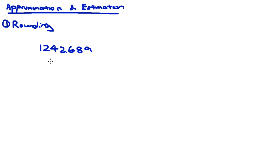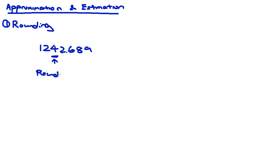If we are asked to round off to the nearest hundred, that means we don't want to see tens, ones, or decimal points. So we look at the tens digit. If the tens digit is greater than or equal to 5, then we round up — we add 1 to the hundreds number.